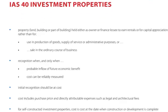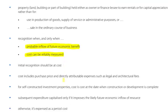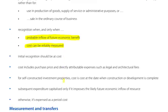Recognition should be when and only when there will be a probable inflow of economic benefits and the cost can be reliably measured. Initial recognition should be at cost, and cost includes purchase price and directly attributable expenses such as legal and architectural fees. For self-constructed investment properties, the cost is the cost at the date when construction or development is complete.